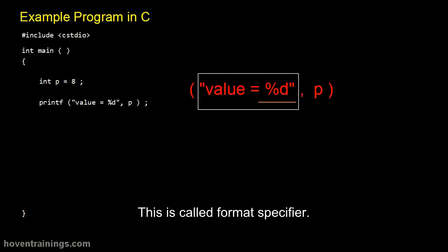This is called a format specifier. A format specifier is preceded by the percent sign. D is the format specifier for an int type of variable.